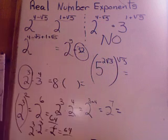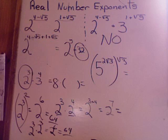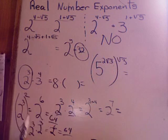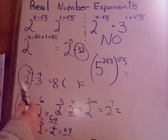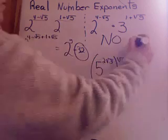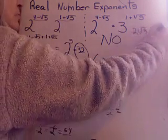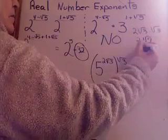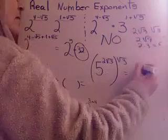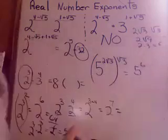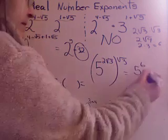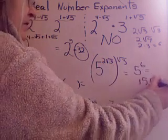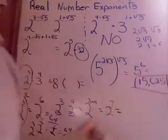Here's a tricky one — power to a power. Do I add these or multiply? Power to a power: multiply the exponents. So what's 2 root 3 times root 3? That's 2 root 9, which is 2 times 3, which is 6. So I have 5 to the 6th power, and using a calculator I get 15,625.